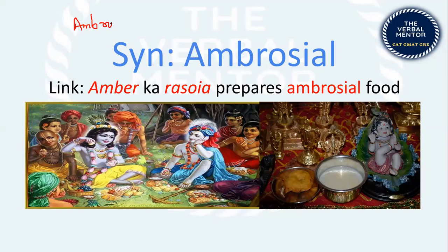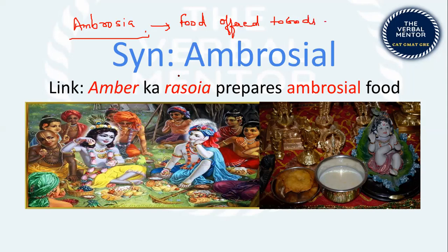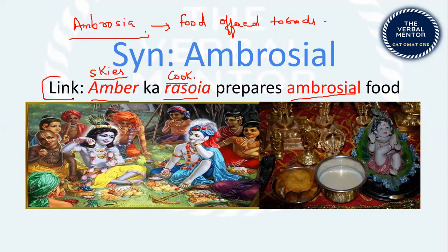Next: 'ambrosial.' Ambrosia is the food offered to gods. Memory tip: 'ambar' means skies in Hindi — amber se aya rasoiya to prepare ambrosia. The cook of the skies prepares ambrosial food. These memory tips are going to help you retain these words — the more ridiculous the link, the better.